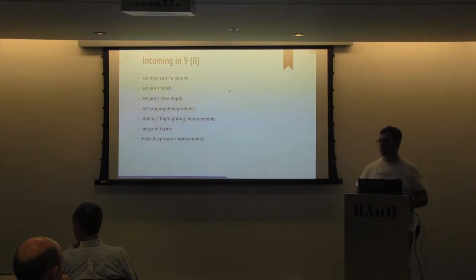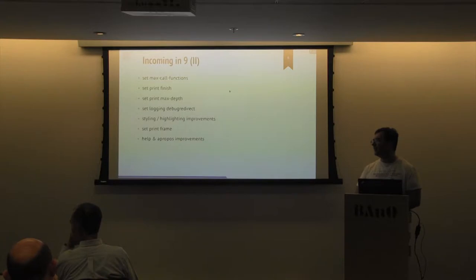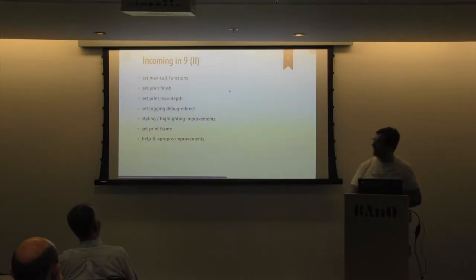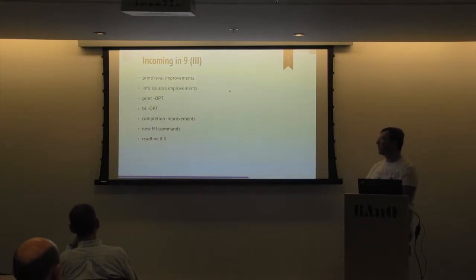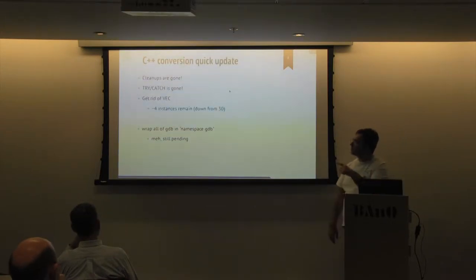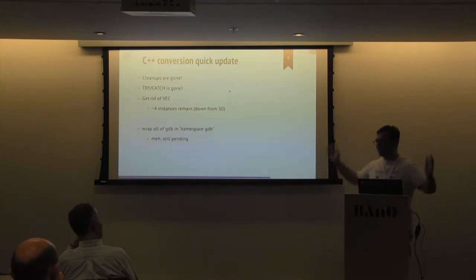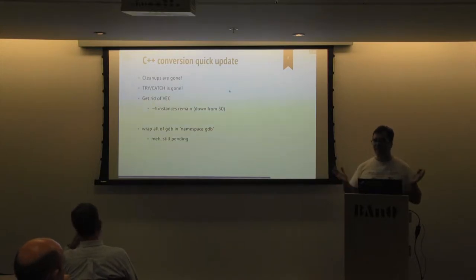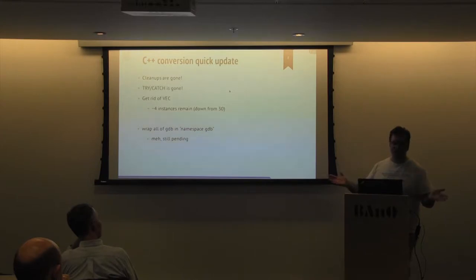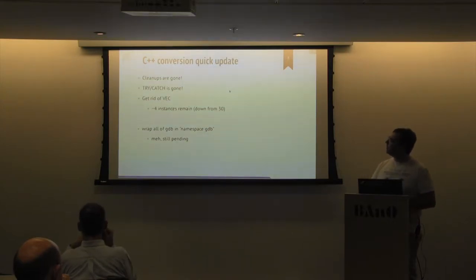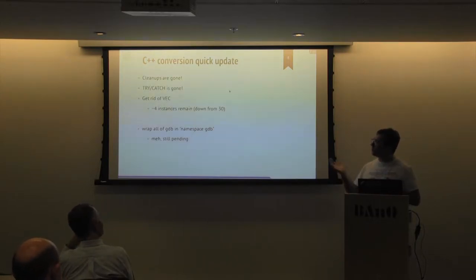We can highlight source in the list. A small update on the C++ modernization is continuing. Last year we were saying that we still have a bunch of cleanups to eliminate. Tricaps is still here, but we no longer have it in the codebase — tricaps and macros are gone. We use normal C++ tricaps now. No more macros. We have a plan to get back to that. I was surprised — we were very close on at least one of the bar instances.